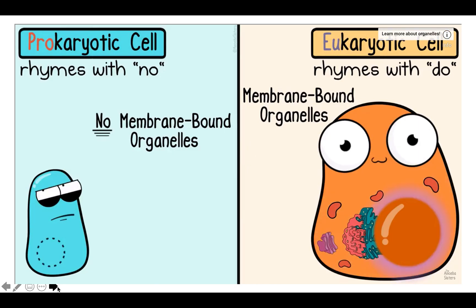A big indicator of eukaryotic cells is the nucleus. Eukaryotic cells do have a nucleus to contain their DNA.